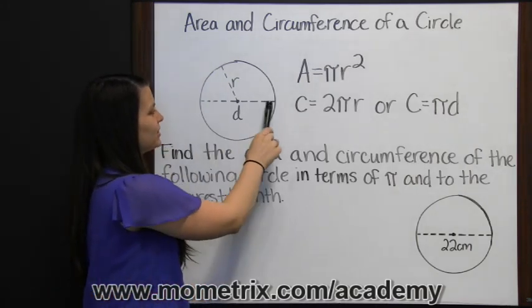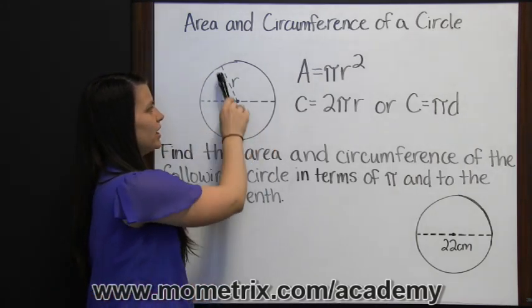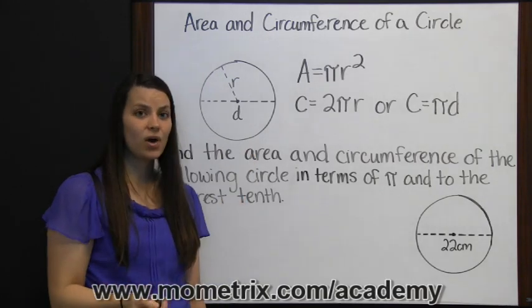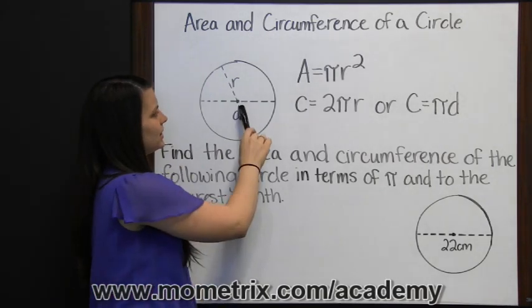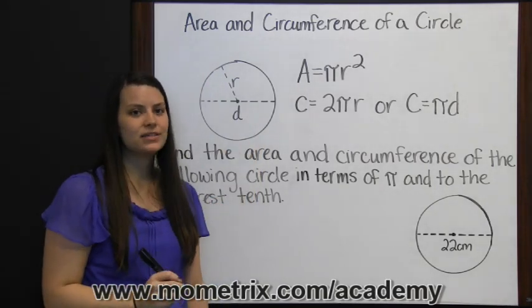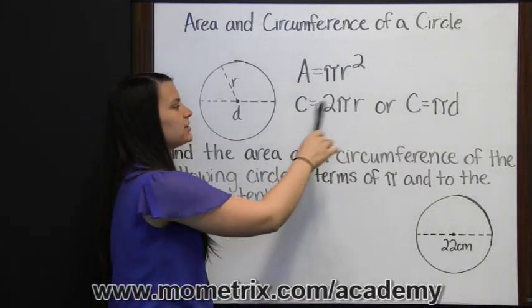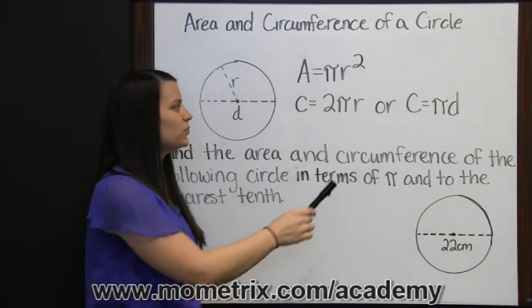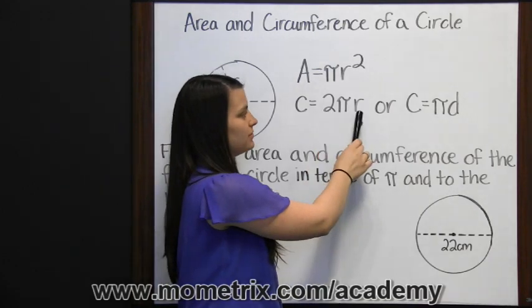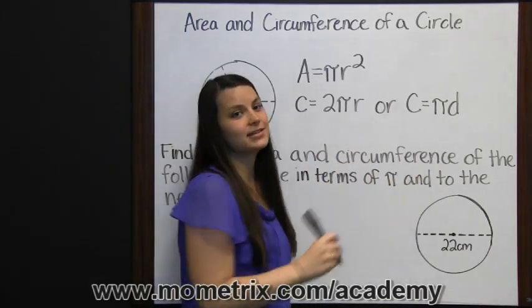The diameter is twice the radius. Likewise, the radius is half of the diameter. These formulas are interchangeable since when you multiply two times the radius, you get diameter.